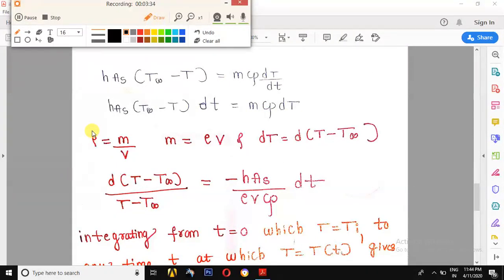Energy balance: this is convection heat transfer. As the body gains temperature, the internal energy of the body changes and is given by mcp delta T by T.